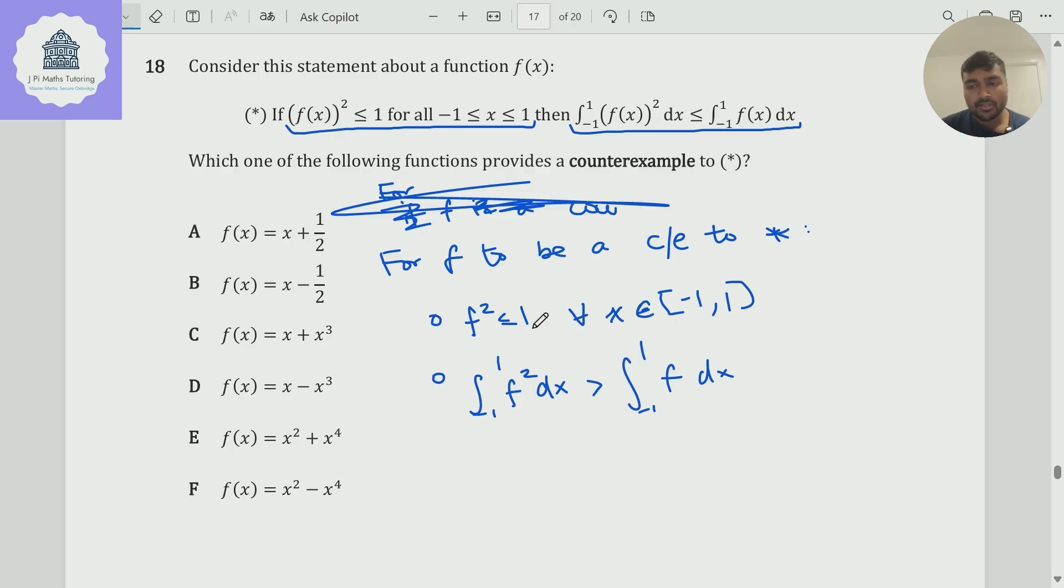I'm going to first look at this first condition. It looks a little bit easier. We need the function, when I square it, to be at most one for every x between minus one and one. This actually eliminates four options. It eliminates option A, because if I substitute x is one into this function, I get three over two. If I square three over two, that's not less than or equal to one. And one is between minus one and one, so that's not an option.